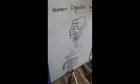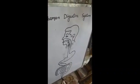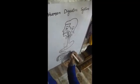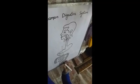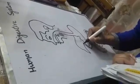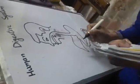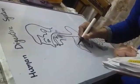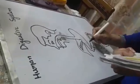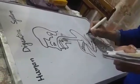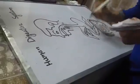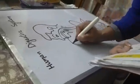Then large intestine, then rectum, and the last one is anus. You have to join here like that. And pancreas. Now write the names.